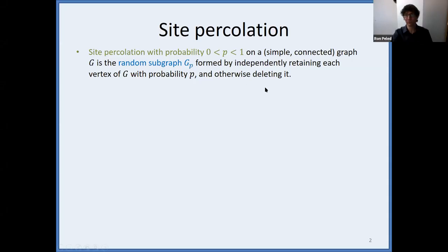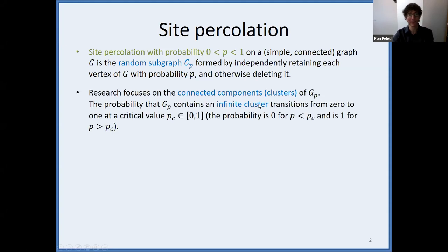Each vertex of this graph G, you retain with probability P independently, or you delete it with probability 1 minus P if you don't retain it. In this way, you obtain a random subgraph — the induced graph on the set of retained vertices. All graphs in this talk will be simple and connected. You get a subgraph of your original graph; of course, the subgraph is not going to be connected, but you consider its connected components.